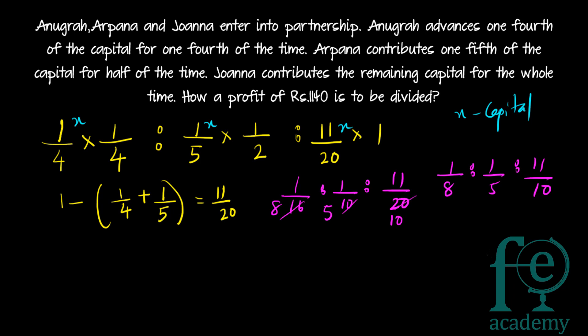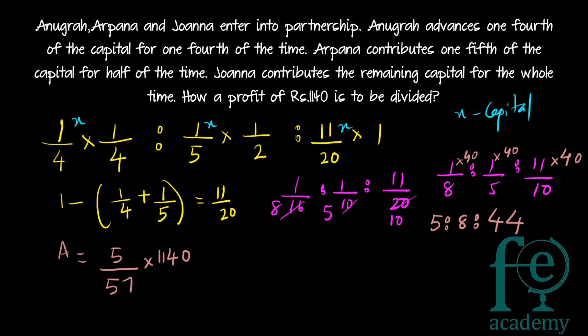What is the LCM of eight, five and ten? The LCM of eight, five and ten is forty. So you multiply each term by forty to get rid of the denominators. You will get the final ratio as five is to eight is to forty-four. So the profit will be divided as: Anigradh gets five out of (5+8+44=57), so five-by-fifty-seven into 1140. Arpanna gets eight-by-fifty-seven into 1140. And Johanna gets forty-four-by-fifty-seven into 1140.